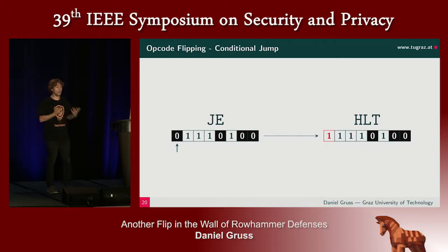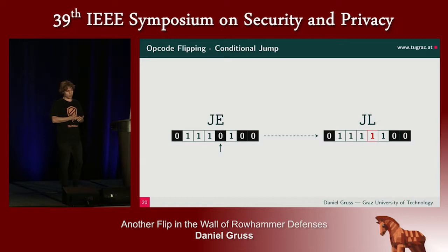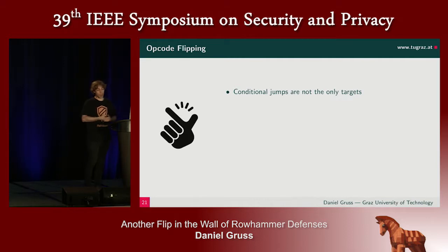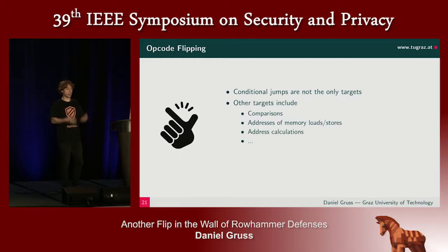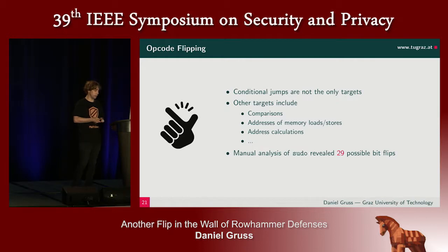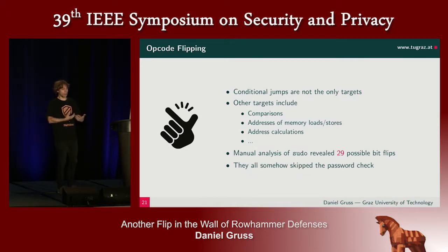To illustrate what might happen in the sudo binary, we look at a jump-equal instruction. If we flip a bit in a jump-equal instruction, it will change the semantics of the program. And if the right bit flips, it changes the semantics in a way that you can directly bypass the password check. We don't need to target exactly that location — we can have a bit flip somewhere else in a binary as well, for instance in comparisons, addresses of memory loads and stores, or address calculations. In a manual analysis, we found 29 possible bit flip offsets, though we think we should automate this search. All of these bit flips somehow skip the password check, so somehow we can become root without knowing the password.